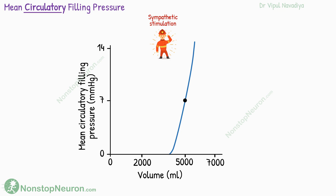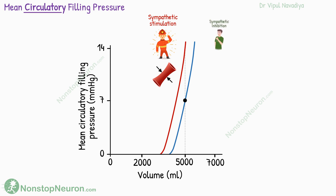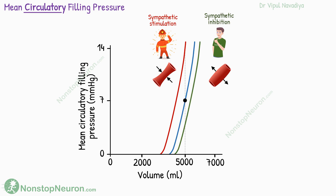Sympathetic stimulation constricts all blood vessels and even the heart. This increases the pressure at each level of blood volume, so the curve is shifted up. On the other hand, inhibition of sympathetic stimulation causes relaxation of blood vessels, so the pressure for all values of blood volume decreases — the curve shifts down.